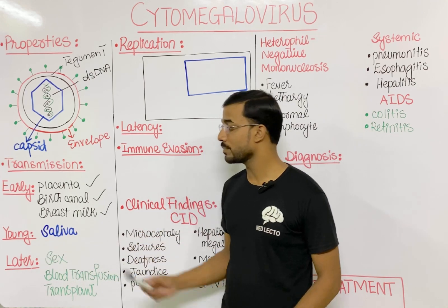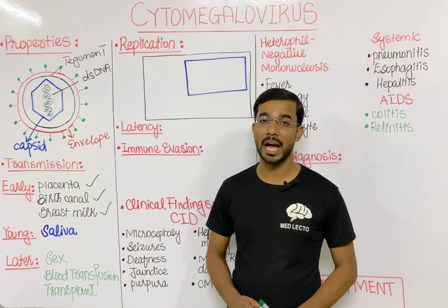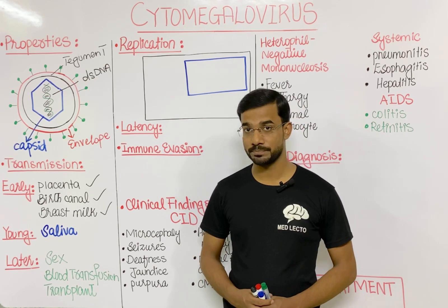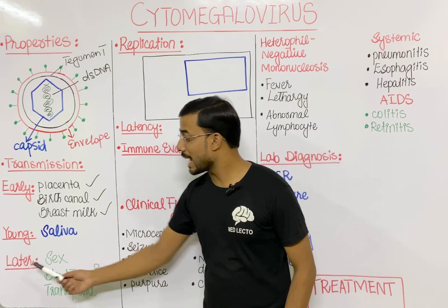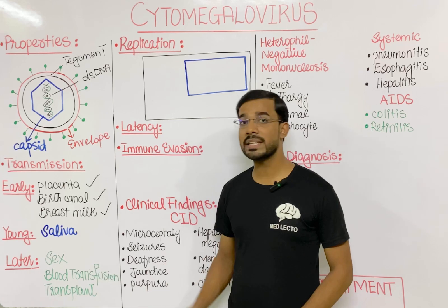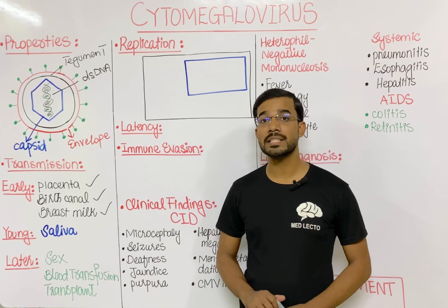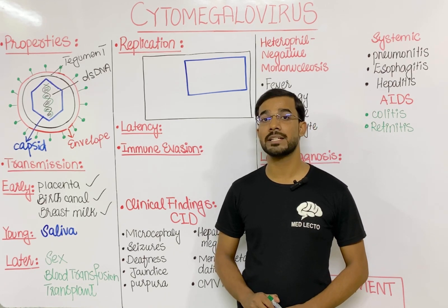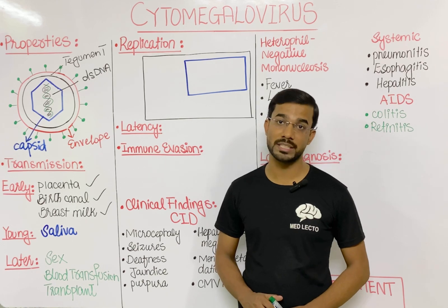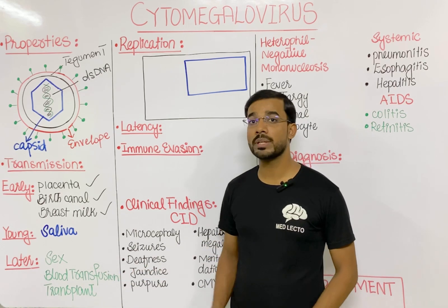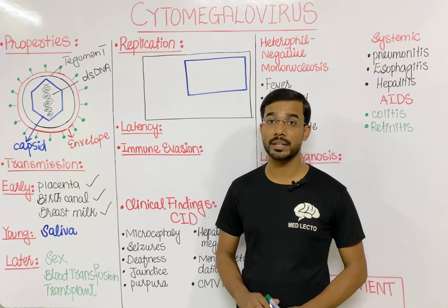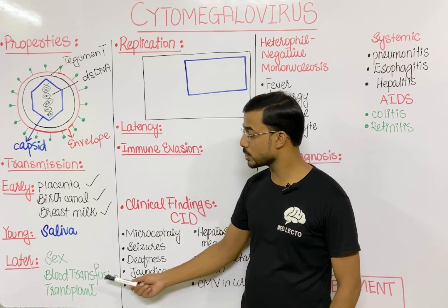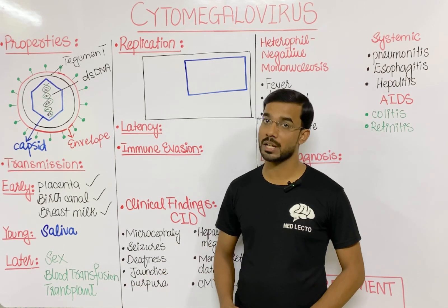Second, in young age, it can be transmitted through the saliva — cytomegalovirus is present in our saliva. In later life, during sexual contact, cytomegalovirus can transmit from one partner to another because it is present in both semen and cervical secretions. It can also be transmitted through blood transfusion, so it is very important to check for cytomegalovirus before transfusion.